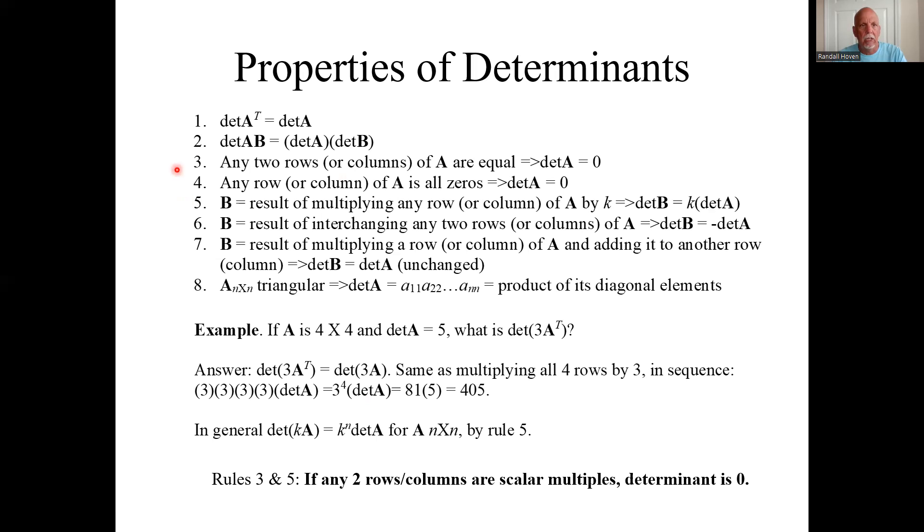Now we can talk about combining properties three and five. If any two rows are equal and I multiply one row by a scalar, so think about it. That means if any two rows or columns are simply scalar multiples of each other, then the determinant is also zero. Call that the tenth rule, but it's derived from these eight.